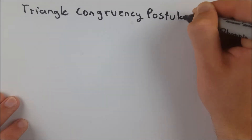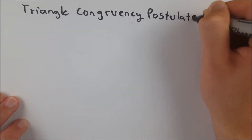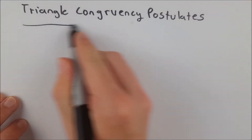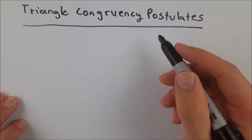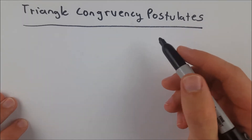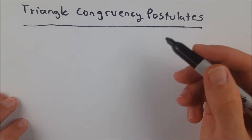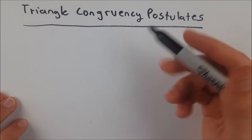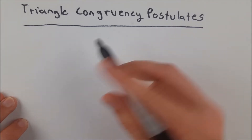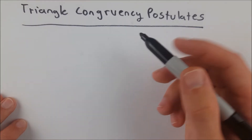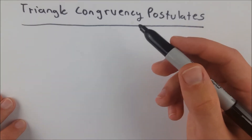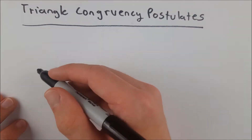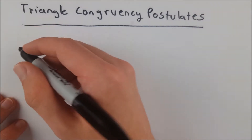Hello, everyone. Welcome back to Wrath of Math. I'm your host, Sean Ian. In today's video, we will be going over the triangle congruency postulates. We'll talk about four main postulates that prove two triangles are congruent. We're just going to state what they are and look at a couple triangles. Should be a lot of fun.